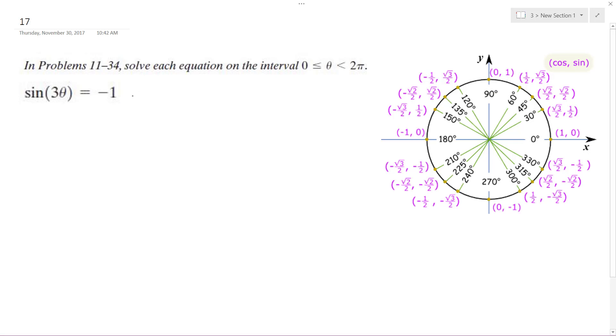Alright, solving this problem. So we've got sine of 3 theta equals negative 1. What we're going to do is take the arc sine, so we get 3 theta equals inverse sine of negative 1.